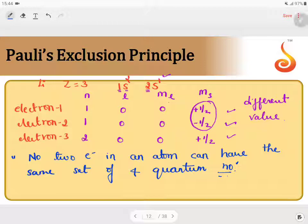And also, it says that in an orbital—we know that orbital is a region around the nucleus where the probability of finding the electron is maximum—you can fill maximum of two electrons, provided each of them should have opposite spin.